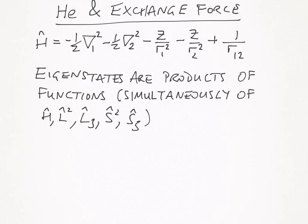For the single electrons, the eigenstates are products of functions, because they're simultaneously eigenstates of the Hamiltonian, of the angular momentum, the orbital angular momentum, and the spin angular momentum.